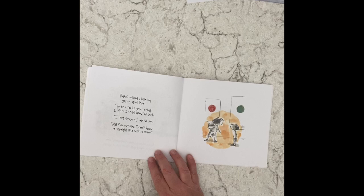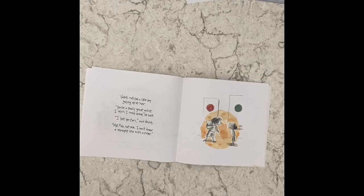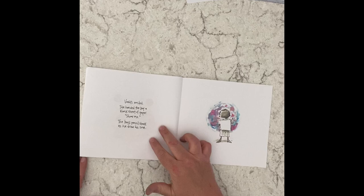Vashti noticed a little boy gazing up at her. You're a really great artist. I wish that I could draw, he said. I bet you can, said Vashti. Me? No, not me. I can't draw a straight line with a ruler.